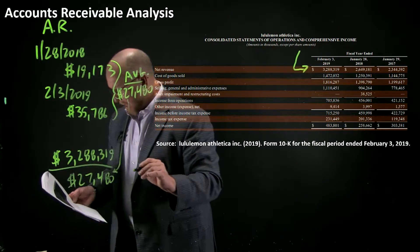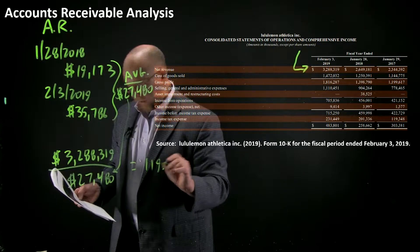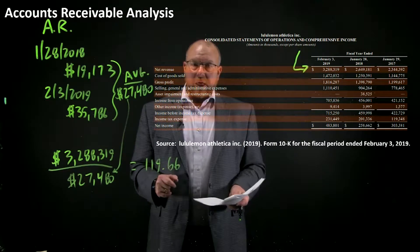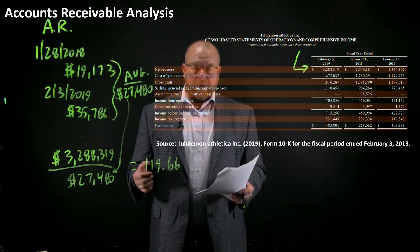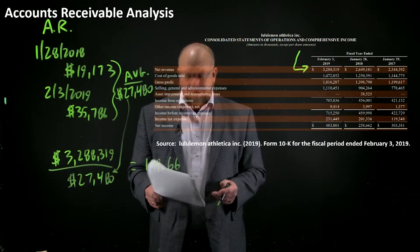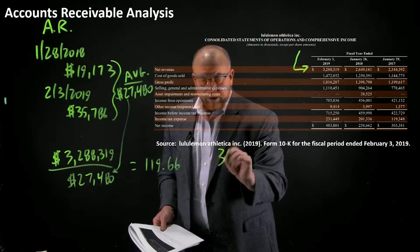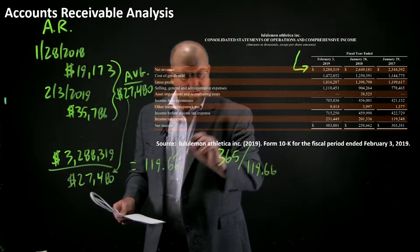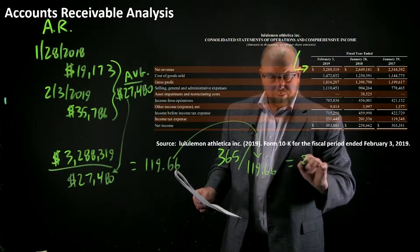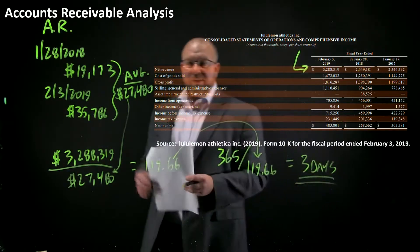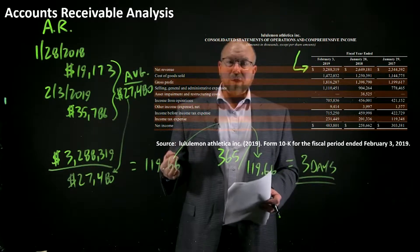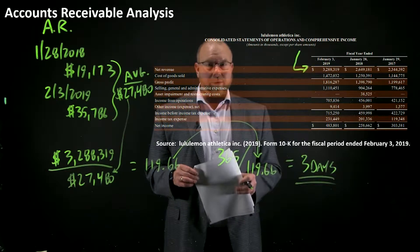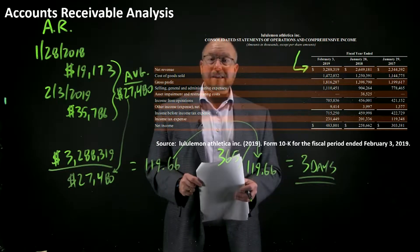The turnover ratio for Lululemon comes out to almost 120 — specifically 119.66. On its own that may not have a lot of context, but it means we're turning over receivables roughly 120 times per year. Dividing 365 by that turnover ratio gives us approximately three days — so on average for this most recent fiscal year, Lululemon collected its receivables in about three days. That's pretty quick compared to Under Armour's average collection period of 44 days.